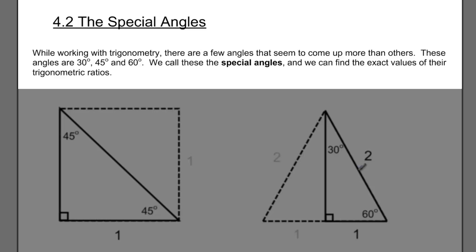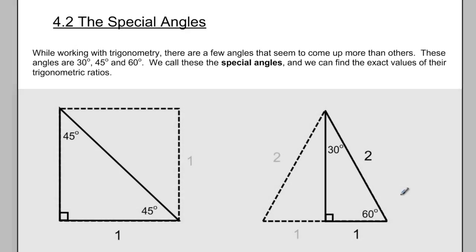Part of our study in trigonometry will require us to come up with the exact values of the trigonometric ratios for these three angles — the 30 degree, the 45 degree, and the 60 degree angle. So we're going to look at how to find the exact values for sine of 30, cosine of 30, tan of 30, and then the same for 45 degrees and 60 degrees.